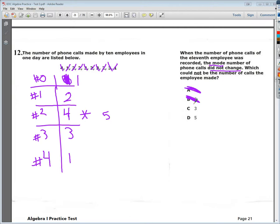C says if I added a three. Well, if I added a three, this number would go up to four, and then my mode would change from this one alone to now this one and this one. So the answer to the question is C.